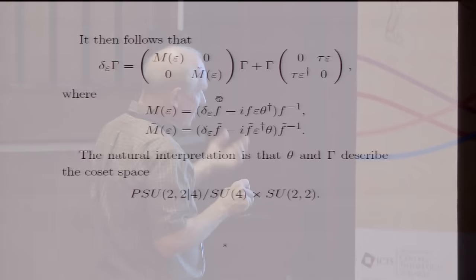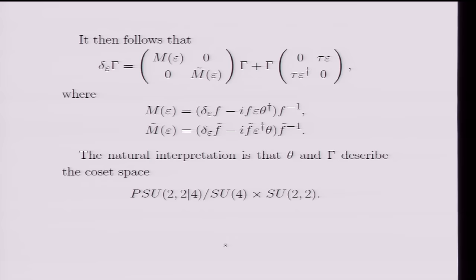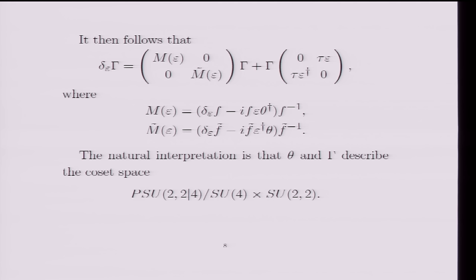So then you can ask, I've already told you how theta transforms under an infinitesimal supersymmetry transformation. So we can ask how this supermatrix gamma transforms. And it turns out that you can describe its transformation as given by some linear transformation by multiplication on the right, and then some induced local SU(4) times SU(2,2) transformation from the left. So you can see here that you're dealing with something that's representing a coset, because you see the global symmetry acting from one side and the local symmetry acting from the other side.